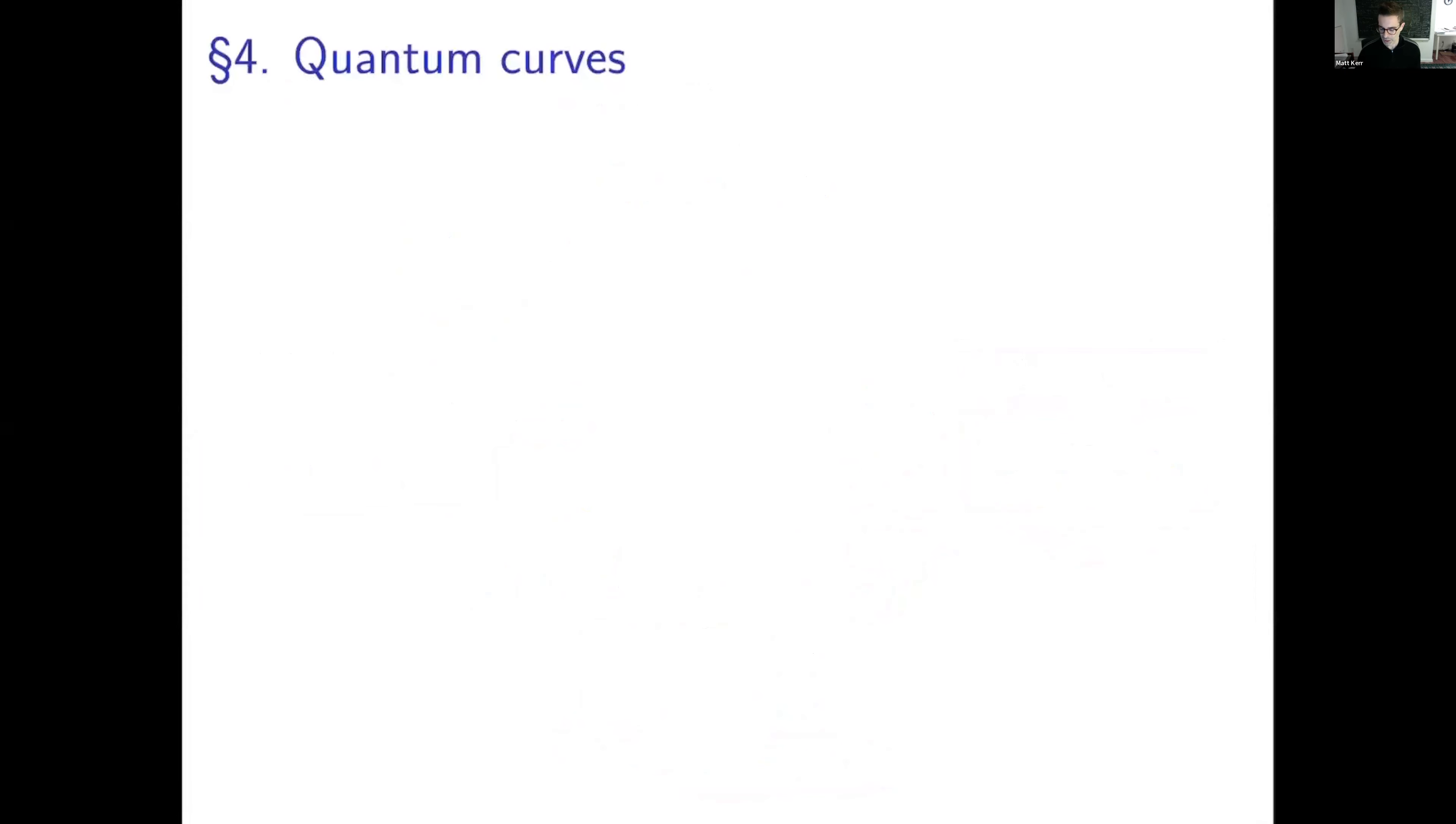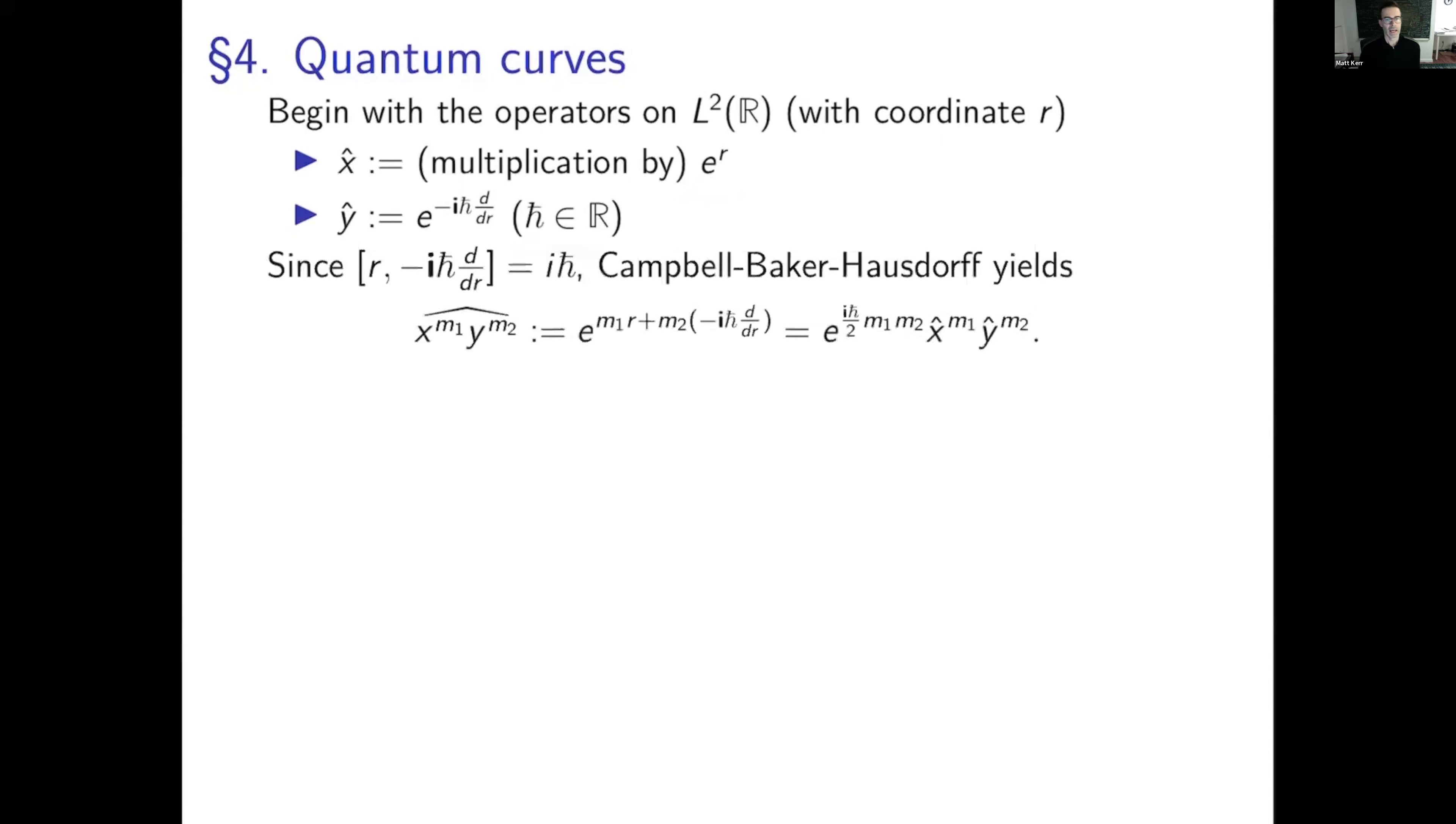Okay. So finally, on to quantum curves. And here I get to state the results. So let's begin with operators on L2 of r with coordinate little r. X hat will be multiplication by e to the r. Y hat will be e to the minus i h bar d/dr for some h bar real. And because we have this commutator, Campbell Baker-Hausdorff tells us that if you want to relate the hat of this, namely e to the sum of these things, with e to these things individually, then there's going to be this commutator to the half interjecting in there.